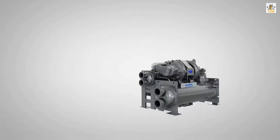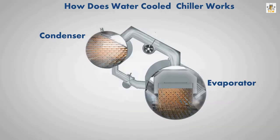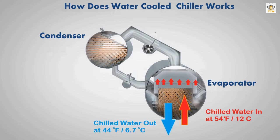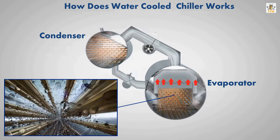The water-cooled chiller transfers heat from chilled water to condenser water as follows. The chilled water enters the evaporator tank at 54 degrees Fahrenheit or 12 degrees Celsius. Inside the tubes, chilled water releases its heat and the temperature drops, flowing out at 44 degrees Fahrenheit or 6.7 degrees Celsius. This heat is absorbed by refrigerant where the temperature is lower, causing the refrigerant to boil and evaporate.